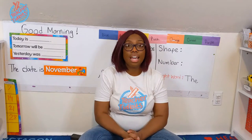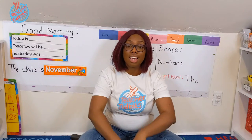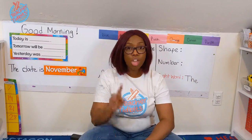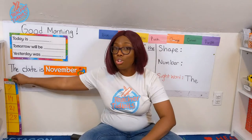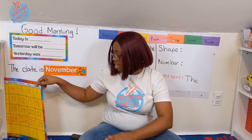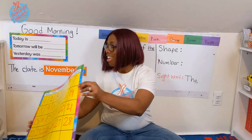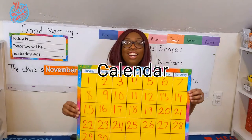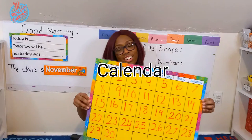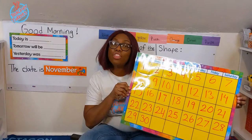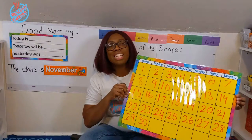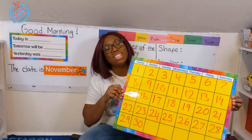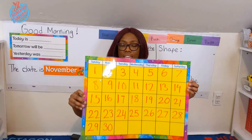Now let's find out what today is. To do that, we need a very special graph. Do you know what that graph is? It's called a calendar. And this is the calendar for this month. Before we talk about the month, let's talk about the days of the week. Here we go.